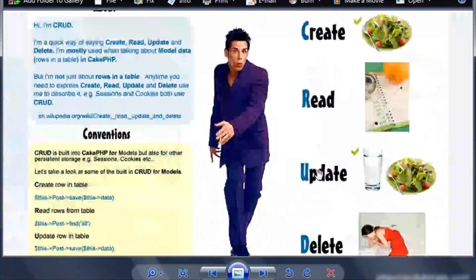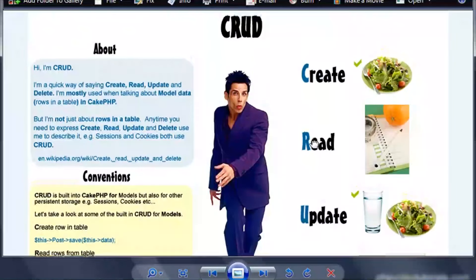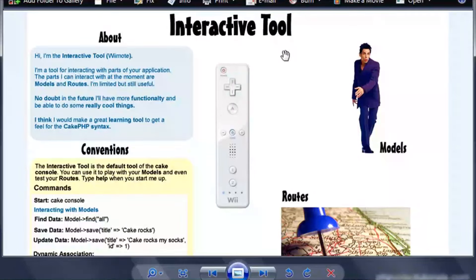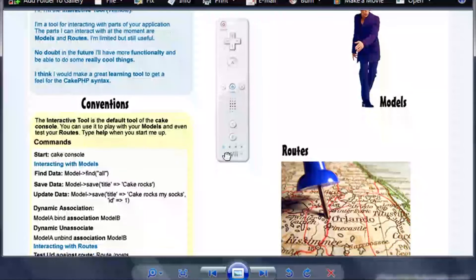Now let's use another tool to play with crud. And we're going to play with our model using another tool I'm going to introduce you to. Time to look at another tool. So let's open up the study guide and check out the interactive tool. It's a tool, so it's part of the cake console. I call it a Wiimote. So it's like the Nintendo Wii's controller. It's very interactive. Hi, I'm the interactive tool, Wiimote. I'm a tool for interacting with parts of your application. The parts I can interact with at the moment are models and routes. I'm limited but still useful. No doubt in the future I'll have more functionality and be able to do some really cool things. I think I would make a great learning tool to get the feel of the CakePHP syntax.